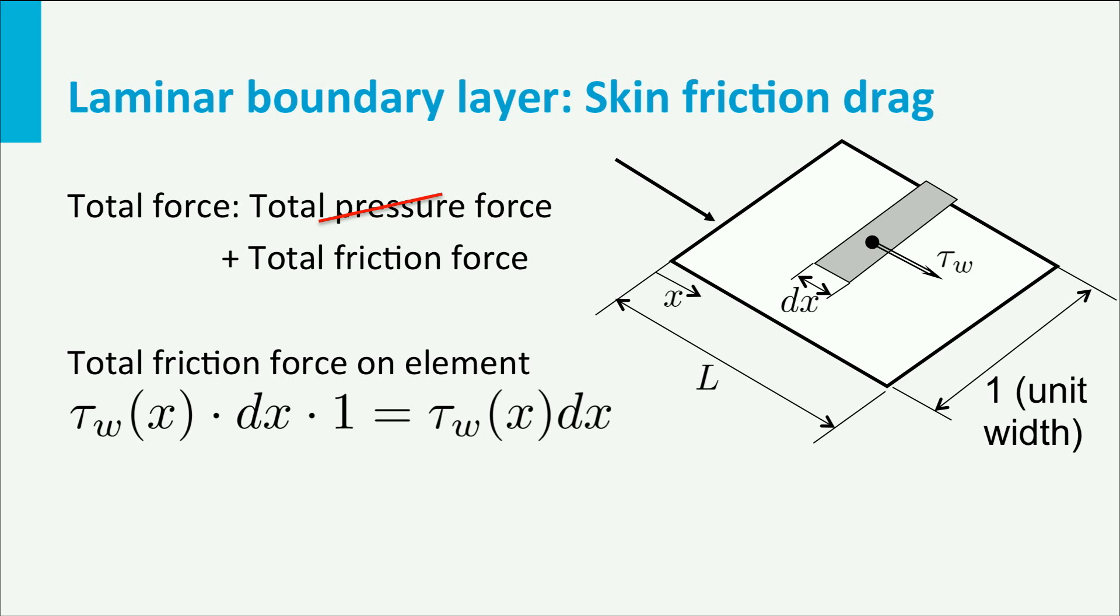The friction force on the element dx is tau times the area, which is dx times 1. The total skin friction drag on the plate is the integral from the leading edge to the trailing edge, so from x equals 0 to x equals L of tau times dx.